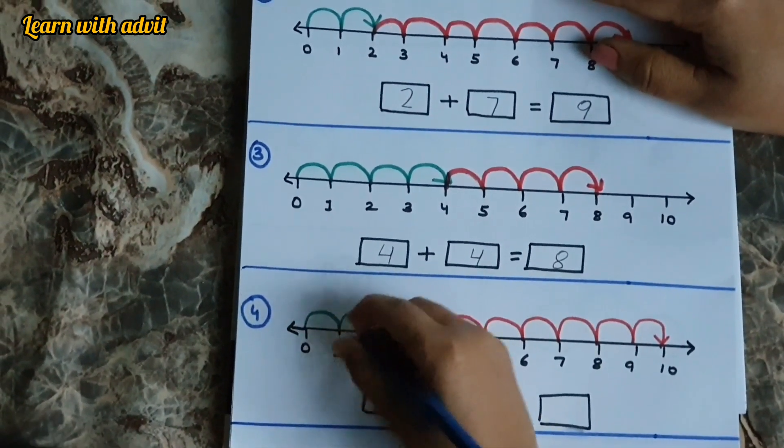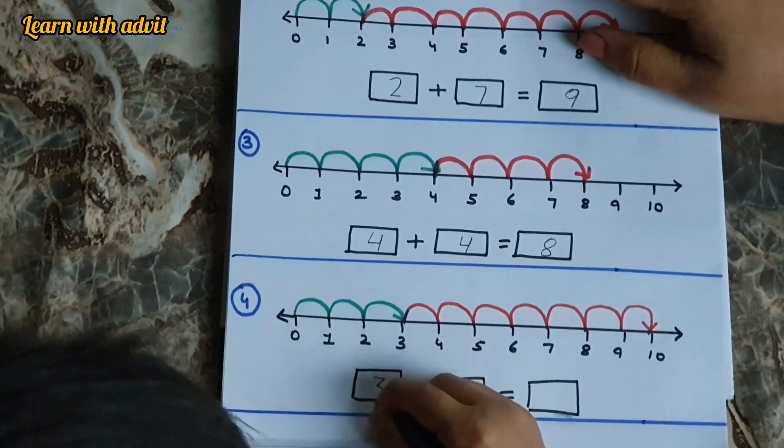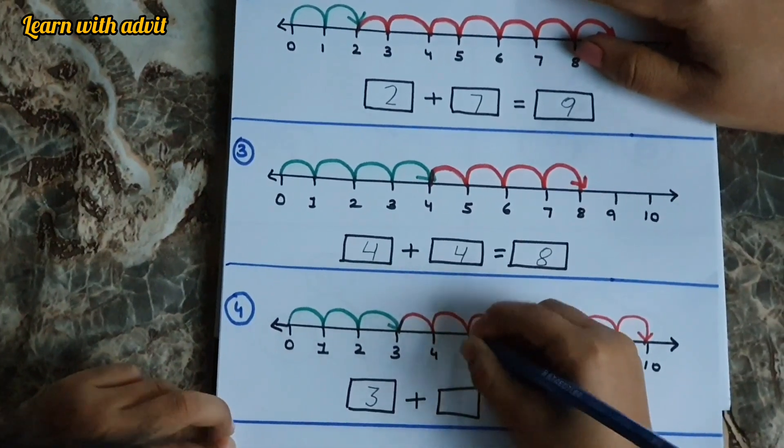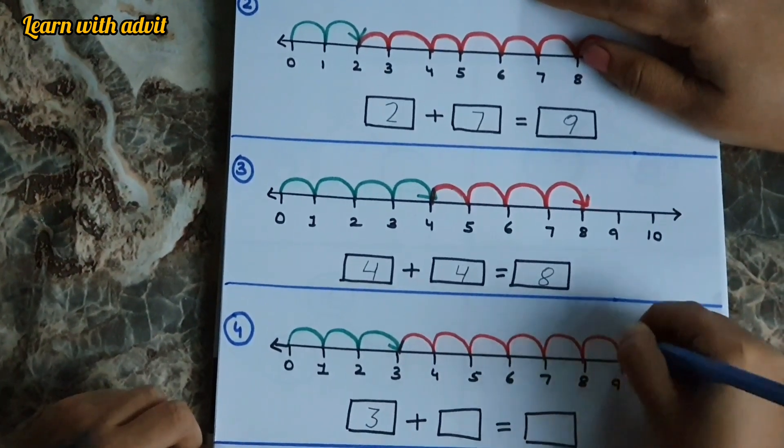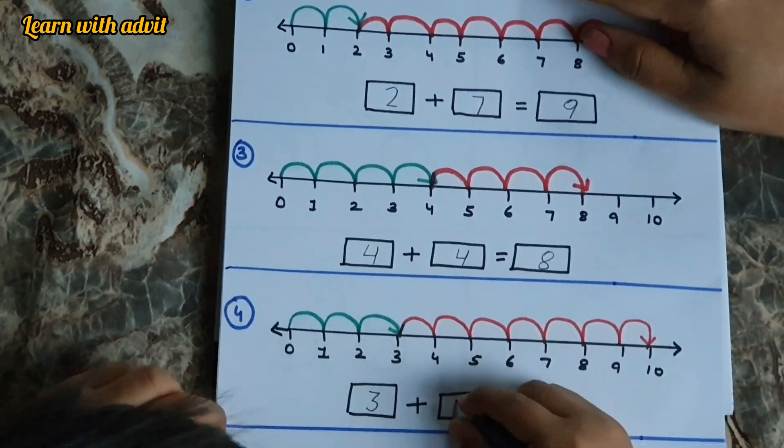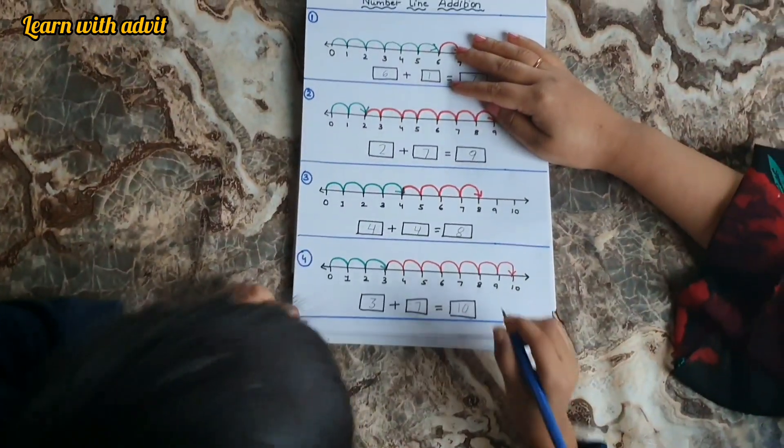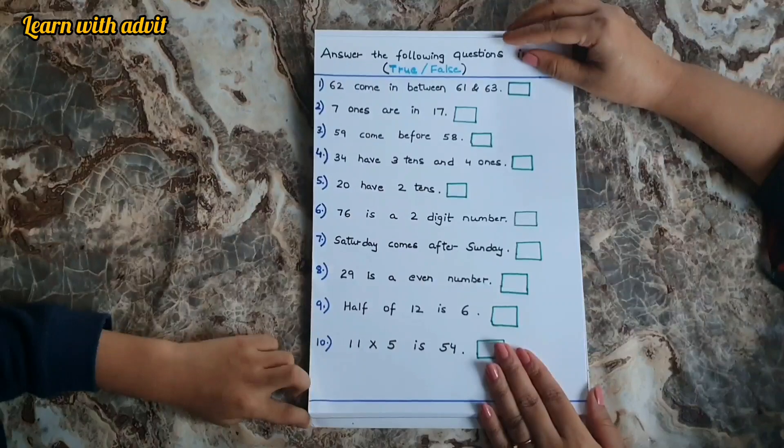Last one. 1, 2, 3. Number is 3 plus 1, 2, 3, 4, 5, 6, 7. 3 plus 7 equals 10. Good. It's a very interesting addition with number line. This is the last sheet.